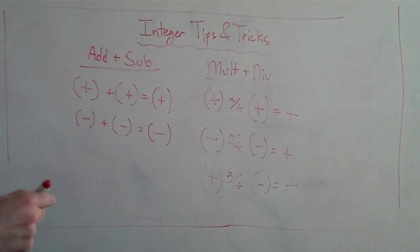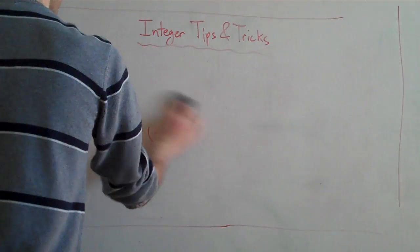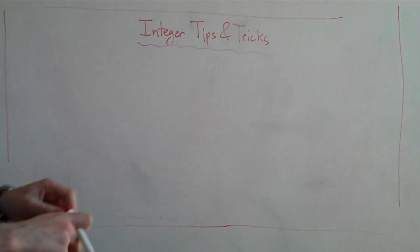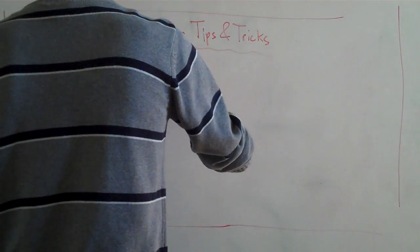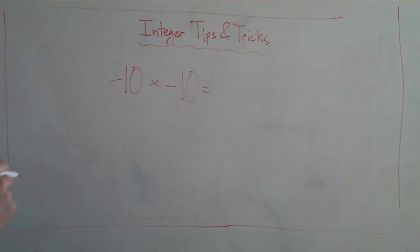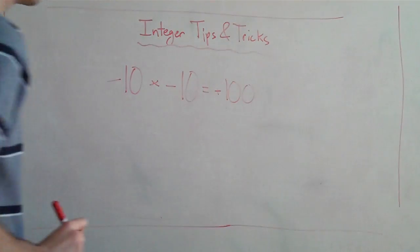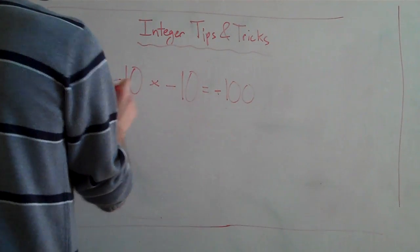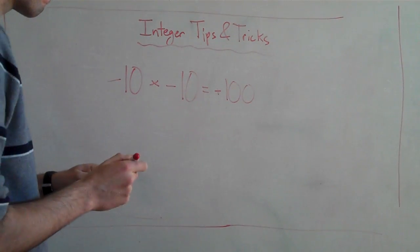Now, sometimes it gets a little tricky. Those are our basic rules. A positive one hundred — that's right. Sometimes it looks like a negative times a negative is going to be a negative, but remember: with multiplication and division, if the signs are the same, it's going to be positive, no matter what.